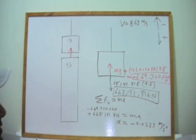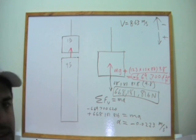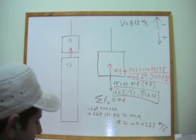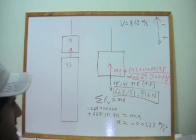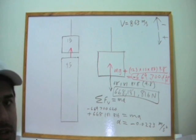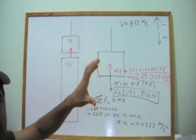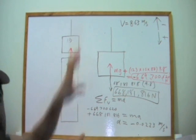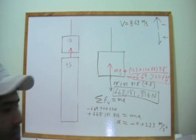you'll find A will equal negative 0.0223 meters per second squared. So, therefore, we have a deceleration here. We don't have an acceleration as we expected because the net force is upwards, not downwards. So, this block that's falling is going to decelerate. It's going to slow down. It's not going to speed up.